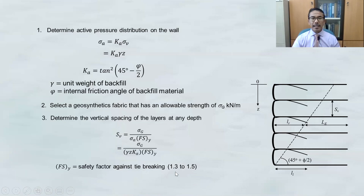The safety factor of 1.3 to 1.5 is relatively low because geosynthetic materials are manufactured with controlled properties, controlled characteristics, and controlled quality. Therefore we are quite confident in the ability of the materials and can use a slightly lower safety factor.